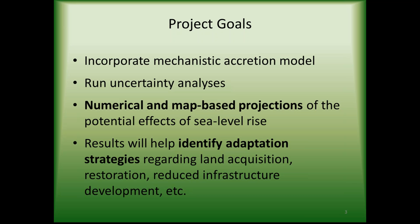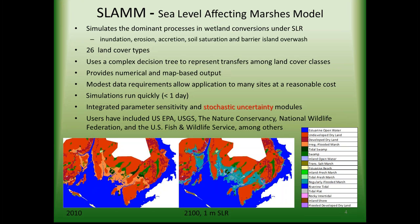Just a little background about SLAM. SLAM is the Sea Level Affecting Marshes Model. It simulates five dominant processes and wetland conversions under the pressure of accelerated sea level rise: inundation, erosion, accretion, soil saturation, and barrier island overwash due to storms. The last two — soil saturation and barrier island overwash — were not applied in these projects due to a lack of data, but the first three are applied universally when SLAM is used.